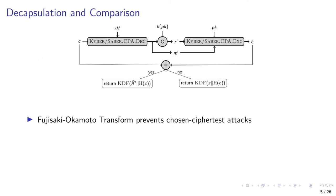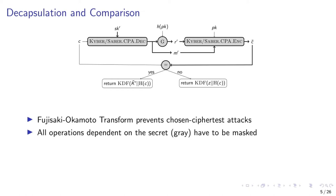One of the most important tools in lattice-based cryptography to detect chosen ciphertext attacks is the usage of the Fujisaki-Okamoto transform. This means that the decrypted message M gets re-encrypted again, and the resulting ciphertext is compared to the input ciphertext. If a non-valid ciphertext is inserted, the resulting output ciphertext will not match the input ciphertext, and the output will be completely random. All operations depending on the secret key SK must be masked to ensure side-channel security.